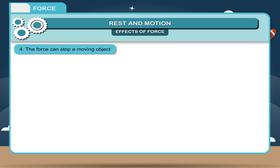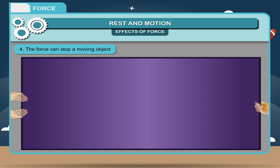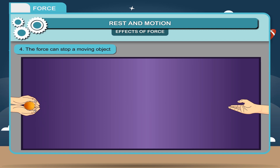Activity: To show that force can stop a moving object, take a table tennis ball and roll it on the tabletop. Ask your friend to stand on the other side to catch it. When your friend catches the ball, the motion of the ball stops. Hence, force can stop a moving object.